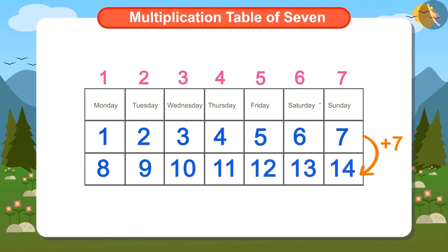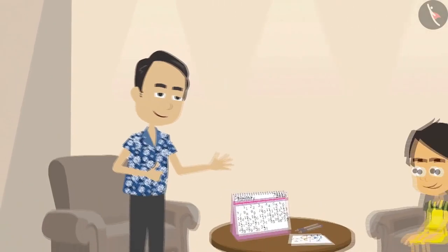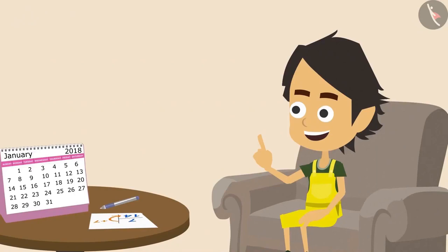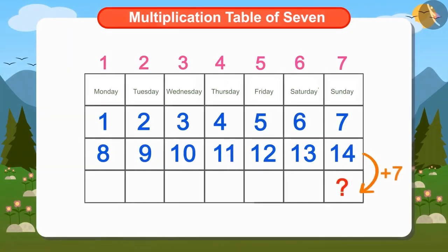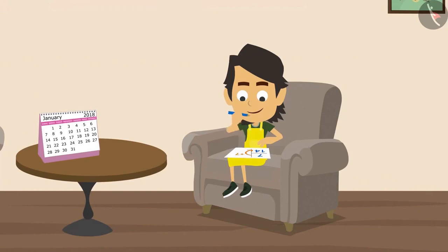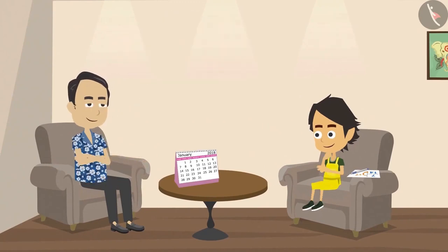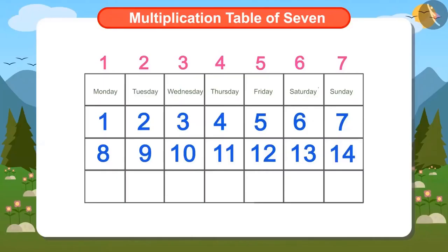Ayushman has found out that next Sunday the date will be 14th. Papa complimented Ayushman and further asked what date would it be on the following Sunday after 14th. Ayushman understood that he has to add 7 to 14, but Papa stops him from using paper and pen. By adding 7 to 14, he will get the date of the following Sunday. Ayushman remembered that he had done this kind of calculation earlier while learning multiplication tables.